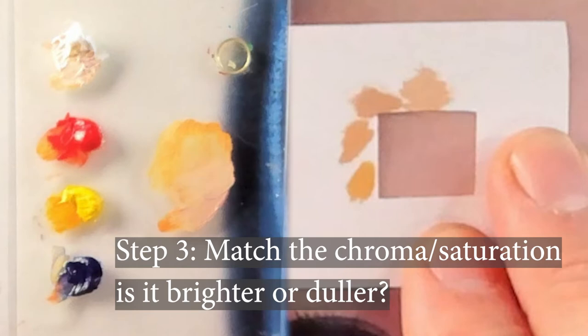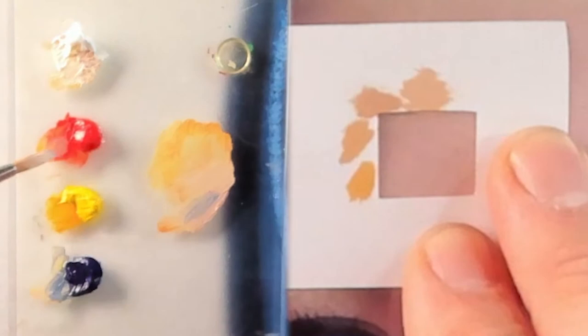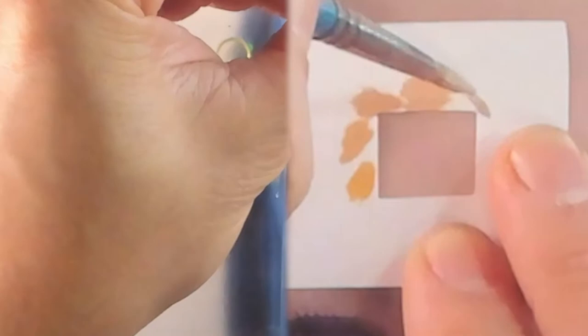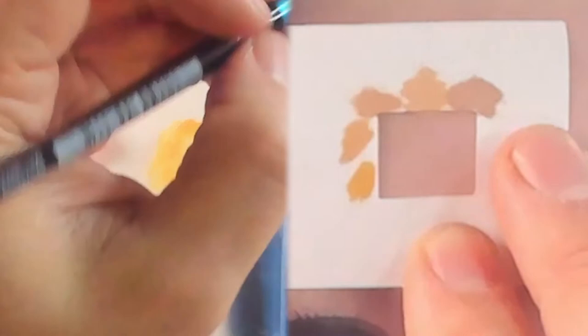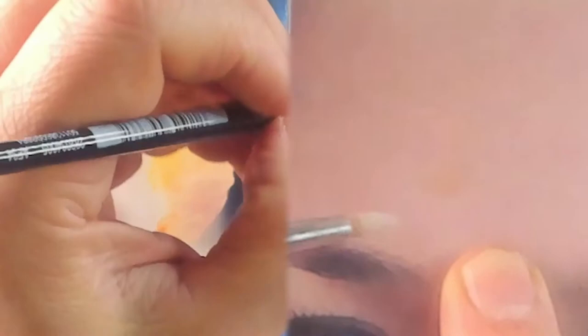So what we have left is still a very yellowy orange, and in order to dull that down, we'll need a like a purpley blue, the opposite on the color wheel. So add a little bit of blue, add a little bit of red. And there you go, it's pretty much spot on. Let's take away, paint a little bit on straight on top. And you can hardly see it, it's a match. Perfect.